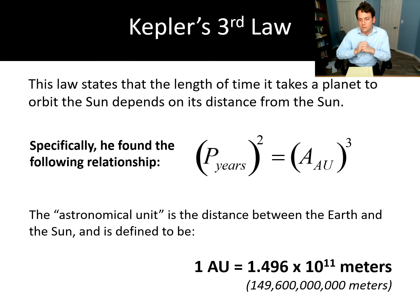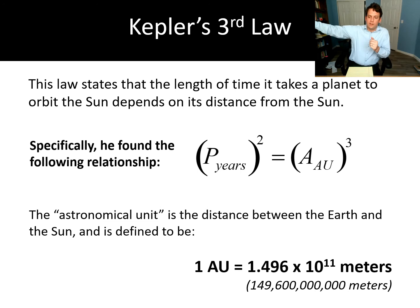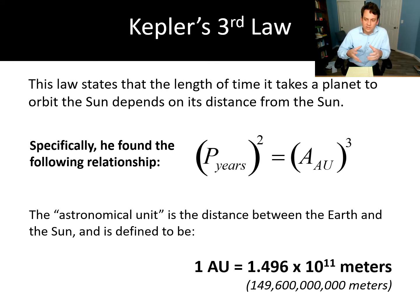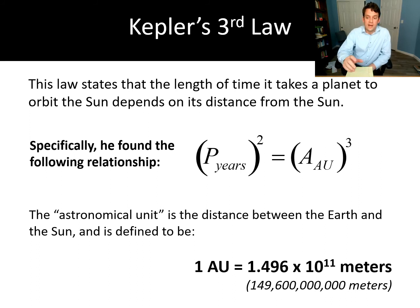The astronomical unit will be used commonly in solar system discussions. For objects outside the solar system, things are so much farther away that we tend to use light years and parsecs instead. But the AU is still an important unit that will show up in the early part of this class. Kepler's third law can be written more generally without requiring these specific units, but this simple form — P² = a³ — is how we'll use it here.